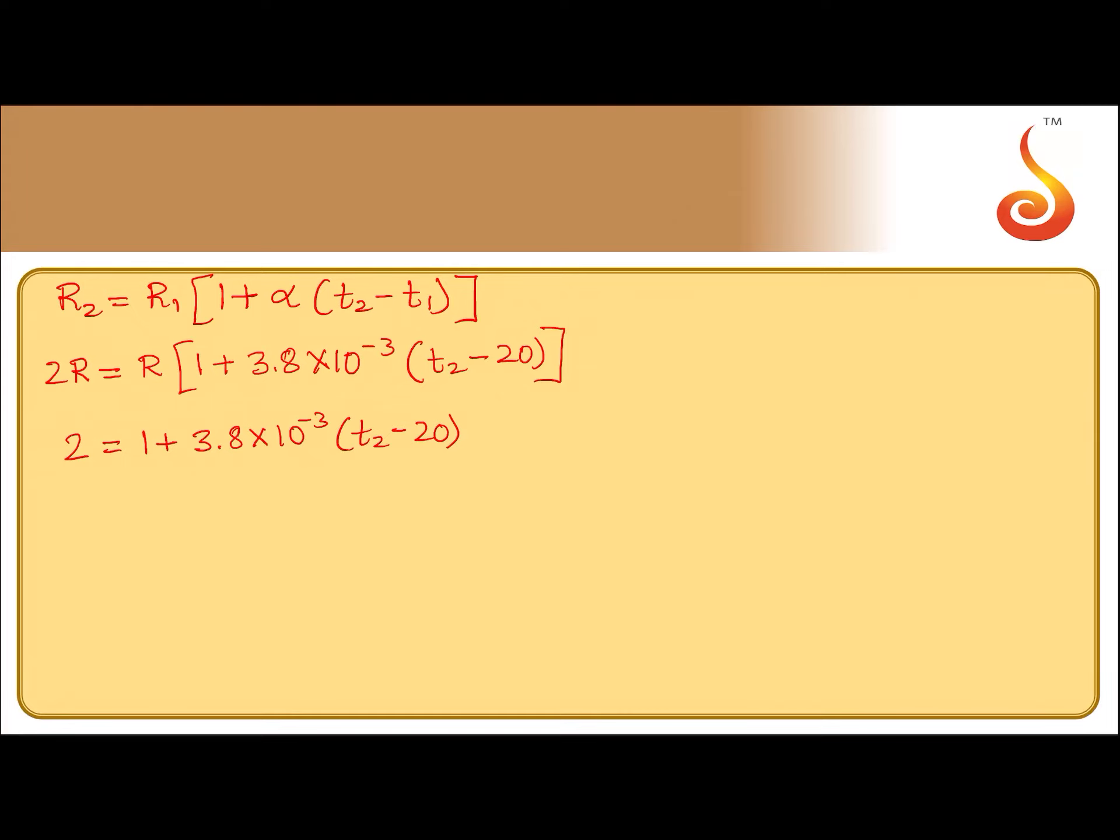Taking 1 to the left-hand side, you get 1 = 3.8 × 10^-3(T2 - 20).